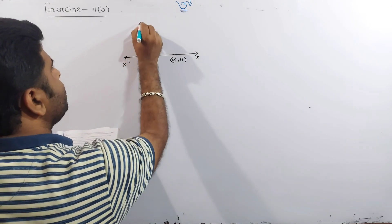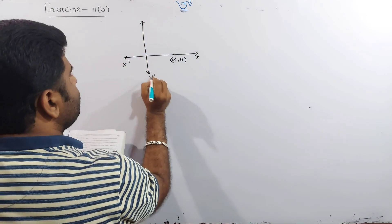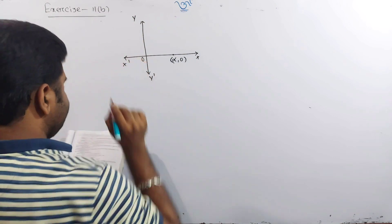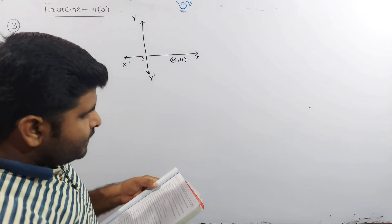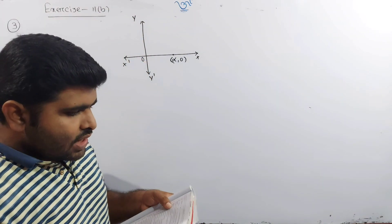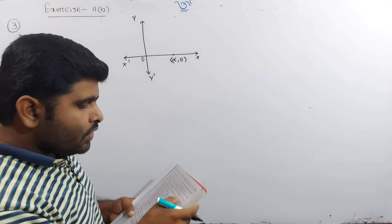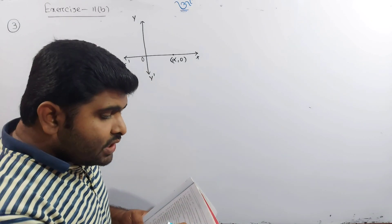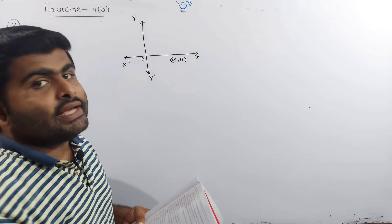This is our y-frame. This is y, this is the origin. When we start the diagram, P of (x, y) is such that its distance from the fixed point equals its distance from the y-axis.